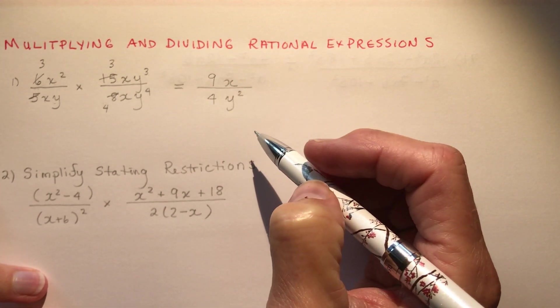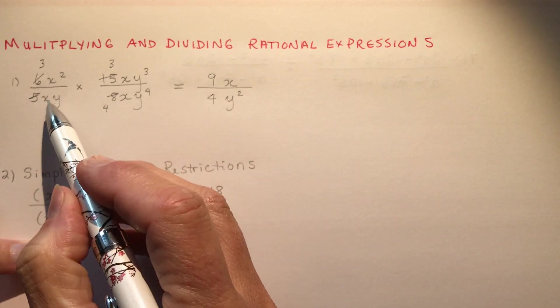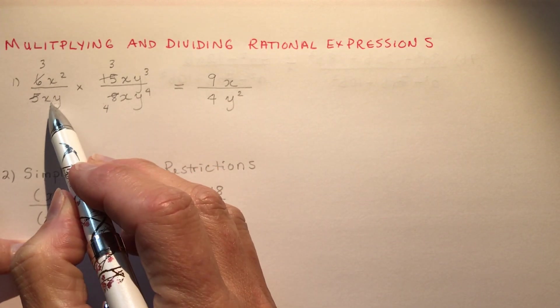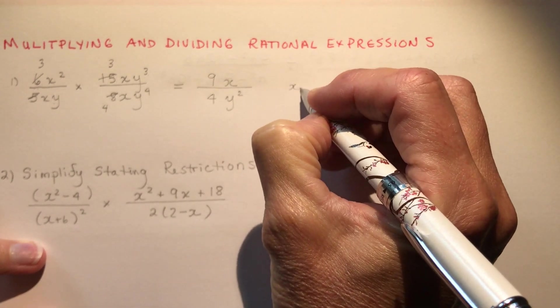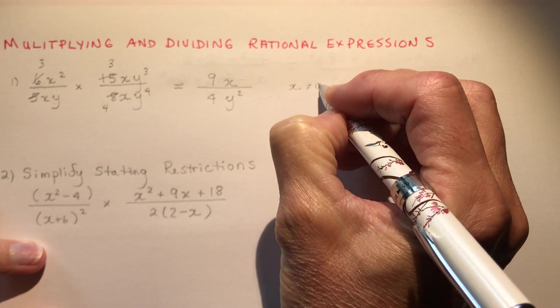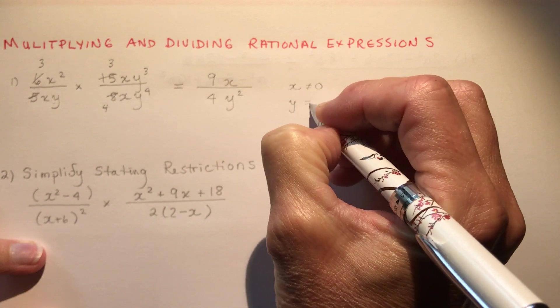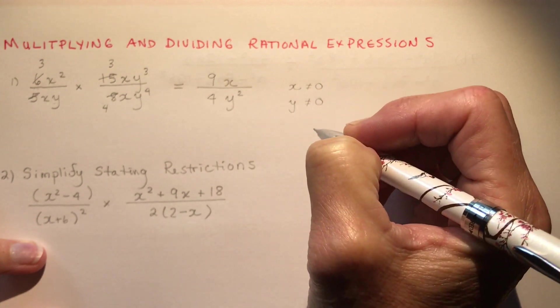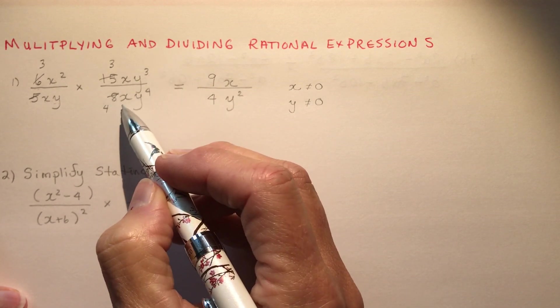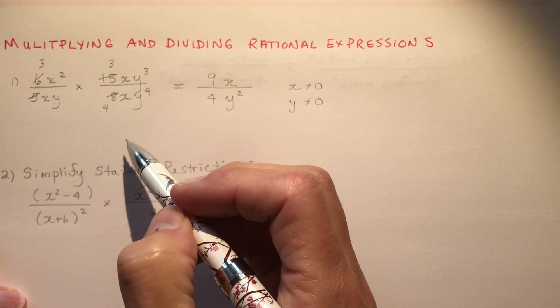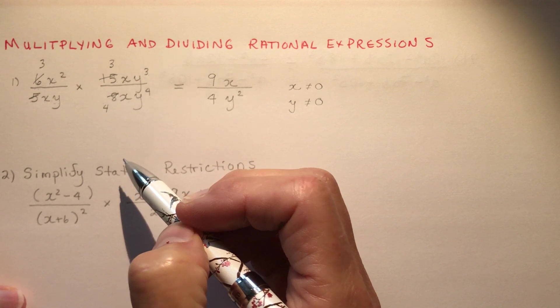Now you have to state what the restrictions are. Because we're multiplying and I have x and y's in the denominator, that would be x is not equal to 0 and y is not equal to 0. The reason being of course that if you have a 0 in the denominator and multiply it by anything, that would make your denominator 0, which of course is inadmissible in math.